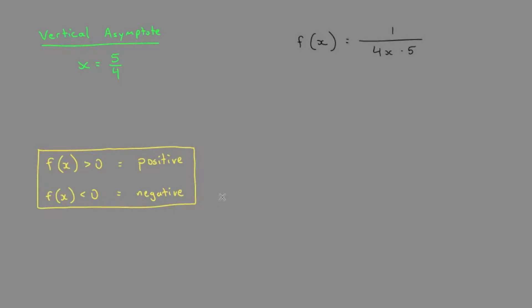To determine where the function is positive or negative, we're going to choose values on either side of our vertical asymptote and plug these into the original function f of x to see if it's less than or greater than 0.